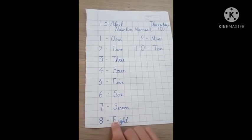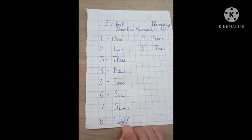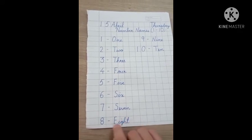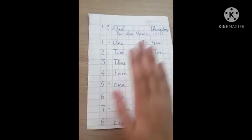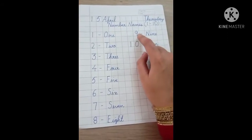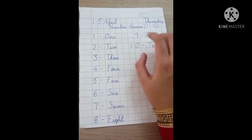8. E capital, I, G, H, T small. E, I, G, H, T, 8. E, I, G, H, T, 8. Then on the right side, because these are small spellings, it can come here.